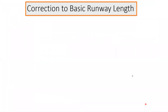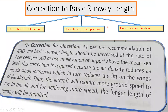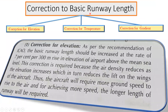We have three correction factors: first, correction for elevation; second, correction for temperature; and third, correction for gradient. This sequence must always be followed — elevation first, then temperature, then gradient.